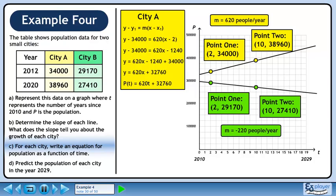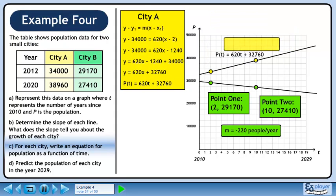We are asked to write this as a function. Population is the dependent variable on the y-axis and time is the independent variable on the x-axis. The function is p of t equals 620t plus 32,760. Let's store the function beside its graph and clear our previous work.